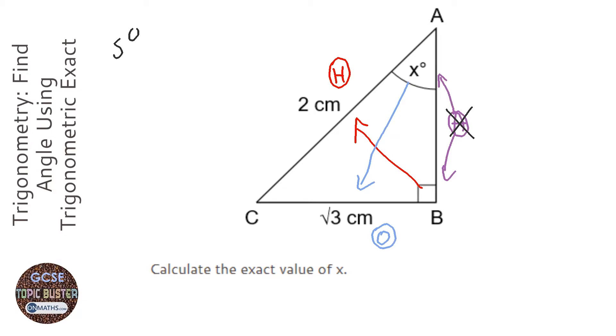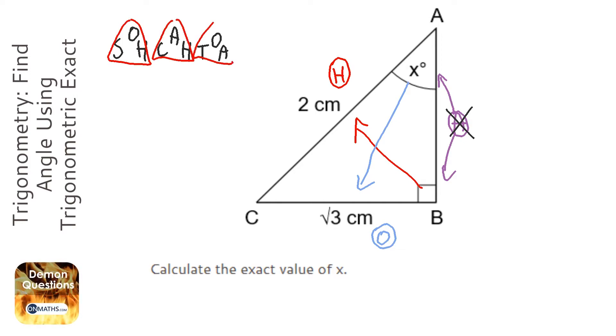Then I'm going to write out my SOHCAHTOA. So exactly the same process as before. These are three triangles and you have to remember these. Now we're not going to use this one and this one because they both have an A in and we've crossed that out.